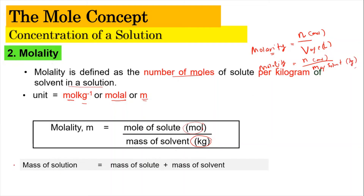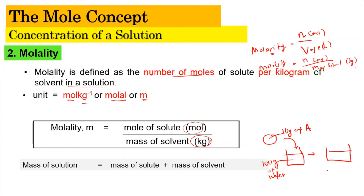An important note: the mass of solution equals the mass of solute plus the mass of solvent. For example, if you have 10 grams of solute A dissolved in 100 grams of water, the total mass of the solution is 10 + 100 = 110 grams. To understand more about this, let us look at the example.